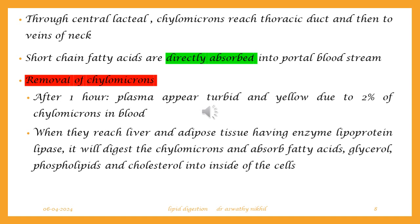Chylomicrons reach the lymphatic circulation, travel to the thoracic duct, and are then drained into the veins of the neck, entering blood circulation. Short-chain fatty acids are directly absorbed into the portal bloodstream. After about 1 hour following a meal, plasma appears turbid due to chylomicrons — about 2% of the plasma. When chylomicrons reach the liver and adipose tissue, they are removed from circulation; the cells absorb the fatty acids, glycerol, and phospholipids and store them. Liver and adipose tissue are the main storage depots of fat.